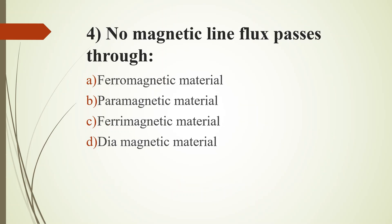Fourth question. No magnetic line flux passes through: Option A, Ferromagnetic material; Option B, Paramagnetic material; Option C, Ferrimagnetic material; Option D, Diamagnetic material. Answer is Option D, Diamagnetic material. When a magnet is brought near a diamagnetic substance, it experiences a weak force of repulsion. So no magnetic flux lines pass through diamagnetic material.